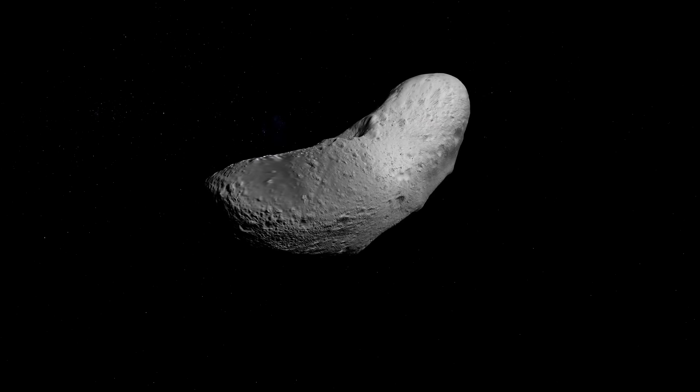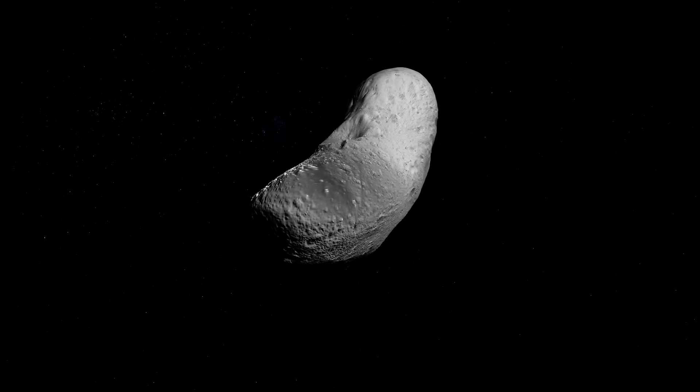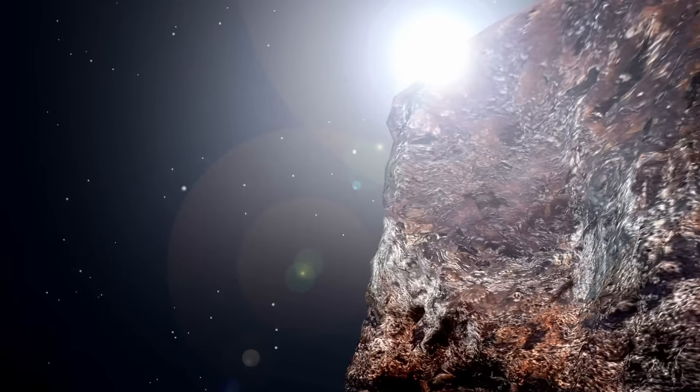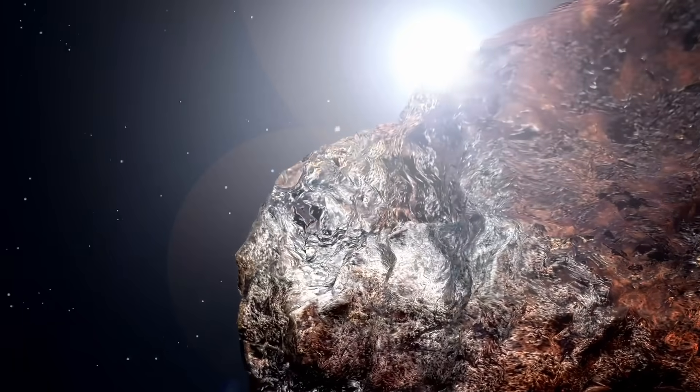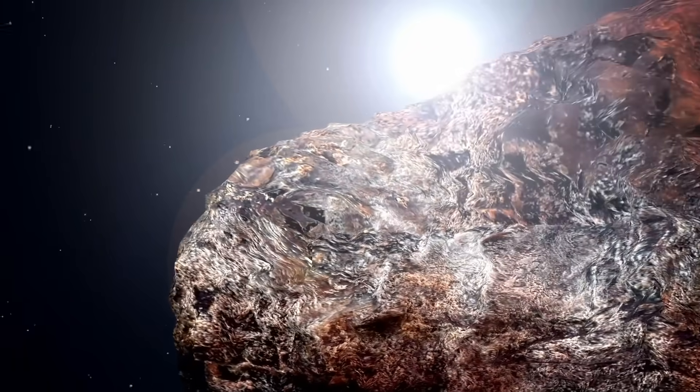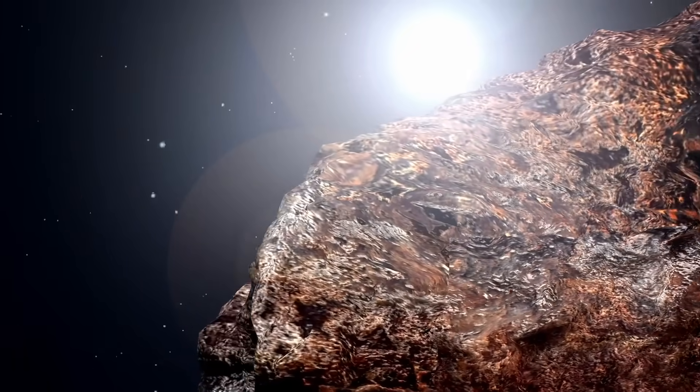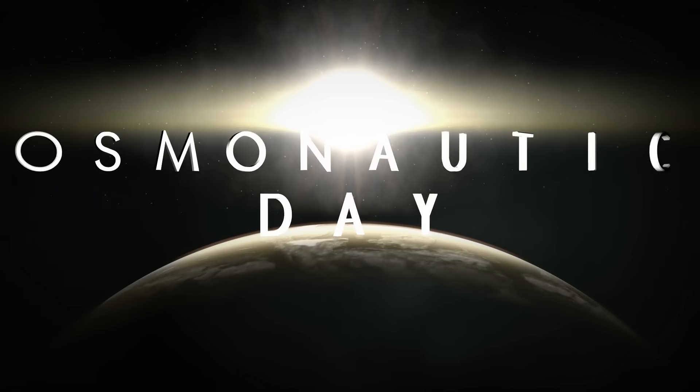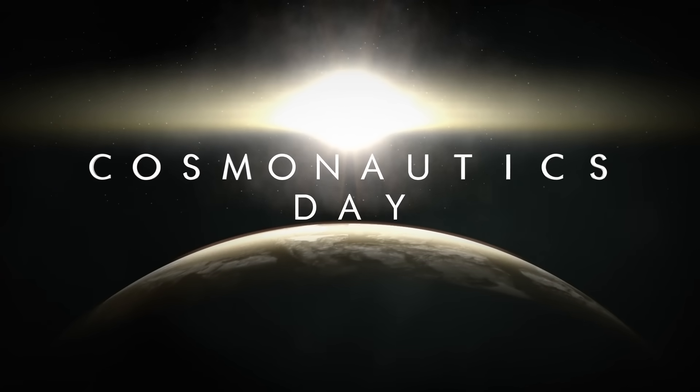Critics argue no natural comet can change its path by 10 kilometers using sublimation alone. That would take more than 10 billion joules of focused energy, far more than any comet outburst we've ever seen. Yet that's exactly what is implied by the trajectory.